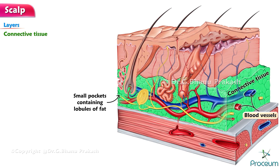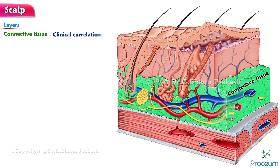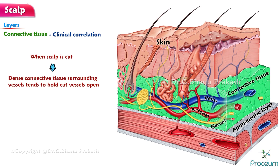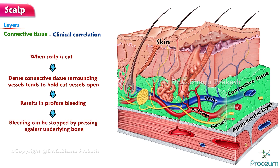Clinical correlation: This layer anchors the skin to the third layer and contains the arteries, veins, and nerves supplying the scalp. When the scalp is cut, the dense connective tissue surrounding the vessels tends to hold cut vessels open. This results in profuse bleeding. The bleeding, however, can be stopped by pressing against the underlying bone.